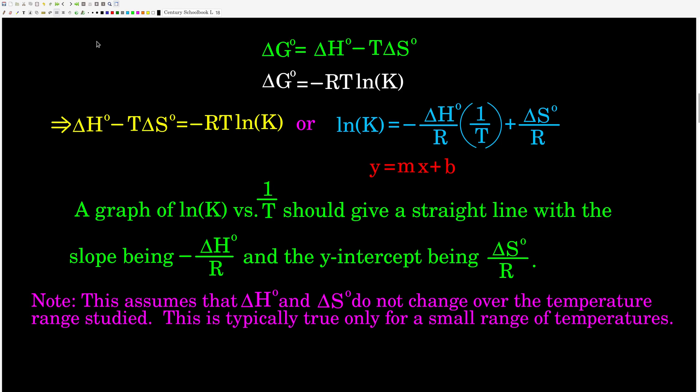So we know so far that ΔG° is equal to ΔH° minus TΔS°. And we also know that at equilibrium, ΔG° is equal to negative RT ln(K), the equilibrium constant.